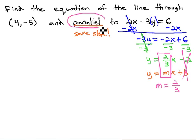We want to be parallel. Parallel lines have the same slope, so our parallel slope will also be 2 thirds. We now know the slope of the line we're looking for.